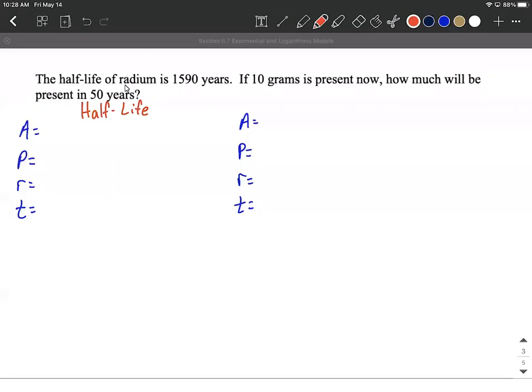Another half-life problem. So in this one, we are told that the half-life of radium is 1590 years. And if 10 grams is present now, how much is going to be present in 50 years?